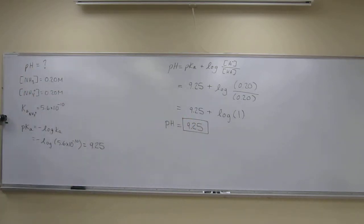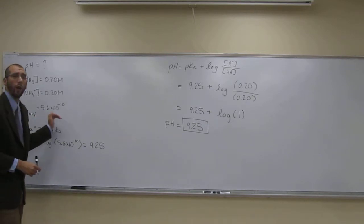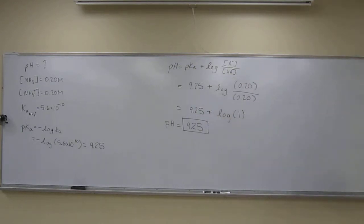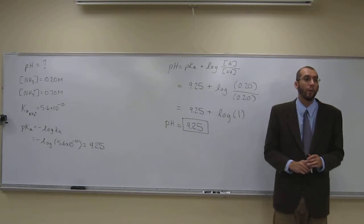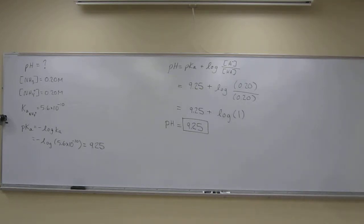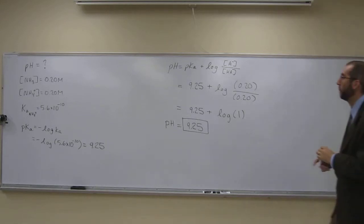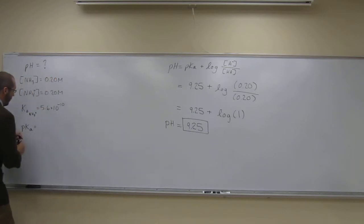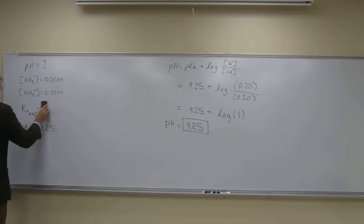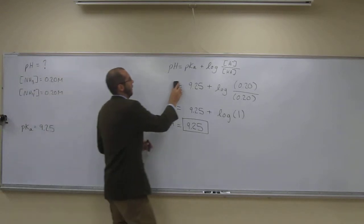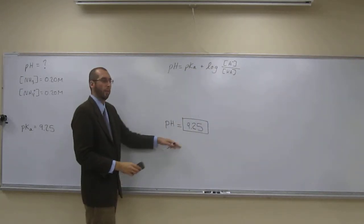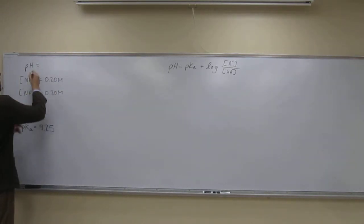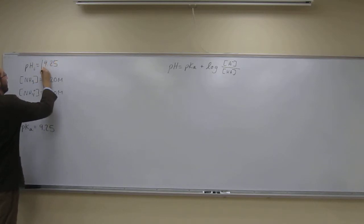You would expect that because the Ka of ammonium ion is much smaller than the Kb of ammonia, so you'd expect a basic solution. The second part asks us to add some HCl, making this basic solution a little more acidic. So the initial pH is 9.25 — that's part one.